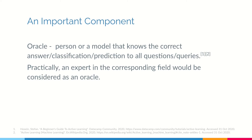An important component here is an oracle. An oracle is a person or something that knows the correct answer or the correct classification for all samples. Practically, an oracle is an expert in that field or could be an algorithm, but it would be expensive to run the algorithm or to consult the person. Thus, we use active learning to reduce the number of labelings needed.